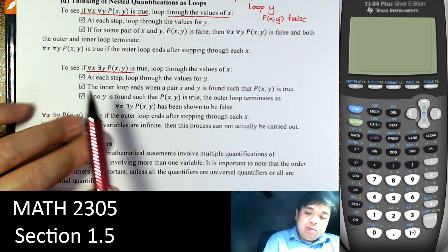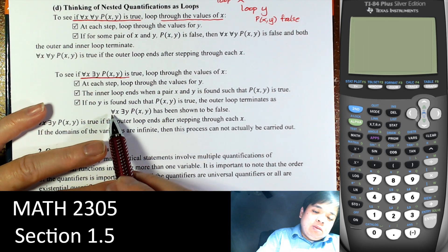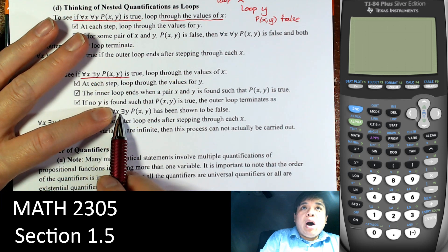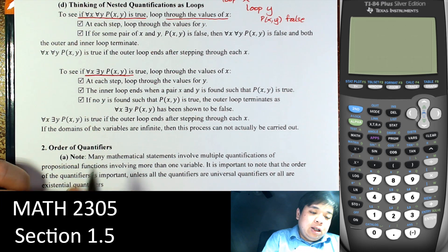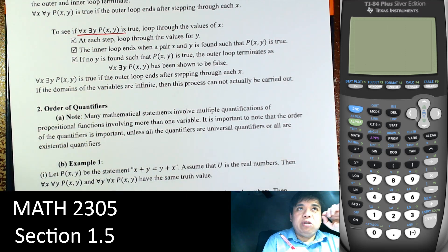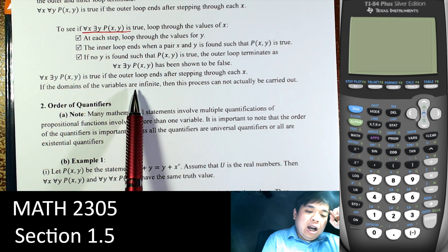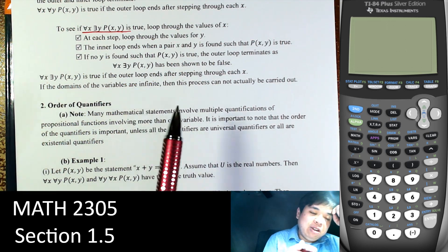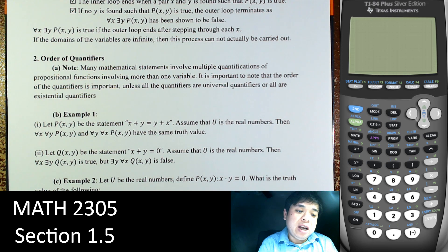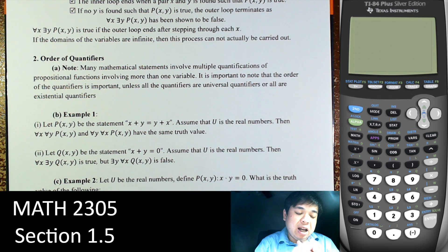So what we need to do is say: for every x, there is a y — P(x,y) is shown to be false if there is an x value where we cannot find a y. If every x finds at least one y, the outer loop ends after every step and we find at least one y for each x. Of course, if the domains are infinite, we cannot just look through everything indefinitely.